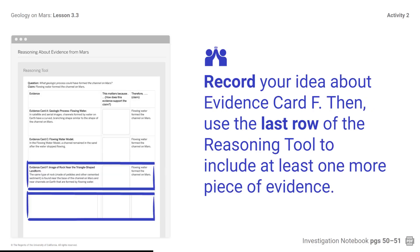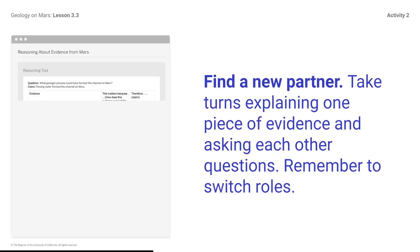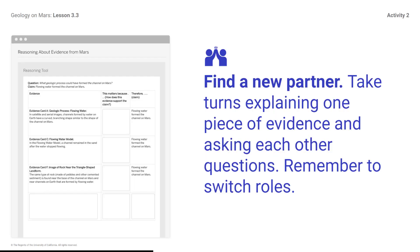Record your idea about Evidence Card F, then use the last row of the reasoning tool to include at least one more piece of evidence. Next, you will select one row of your reasoning tool to share with a new partner. One partner should state the claim they are supporting and then explain how that piece of evidence supports the claim. The other partner can ask a question or suggest how to be more clear or convincing. Find a new partner, take turns explaining one piece of evidence and asking each other questions, and remember to switch roles.